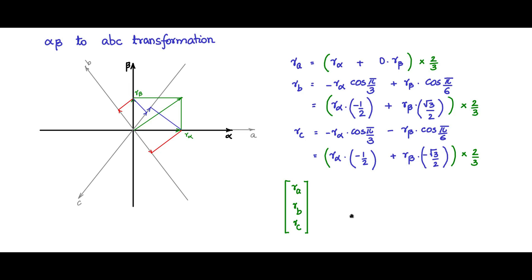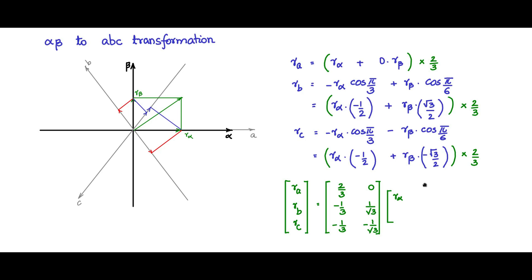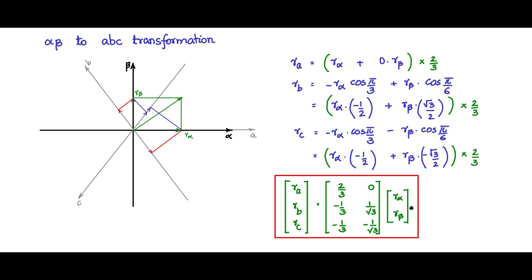In matrix form, [r_a, r_b, r_c] is obtained by the transformation matrix multiplied by [r_alpha, r_beta]. The matrix entries are: for r_a — 2/3 and 0; for r_b — minus 1/3 (from -1/2 × 2/3) and 1/√3 (from √3/2 × 2/3); for r_c — minus 1/3 and minus 1/√3. This transformation matrix converts vectors in the alpha-beta coordinates — r_alpha and r_beta — into the three-phase AC quantities r_a, r_b, and r_c.